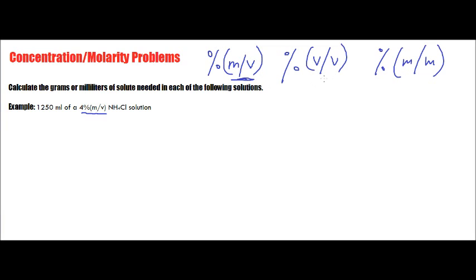Look at these letters — MV and VV. What they really mean is they're almost giving you what the equation actually is. Another way we can look at this is to reverse the symbol and put it after. So I'm going to write this as mass-volume percent, because what we're going to do is think algebra — move away from chemistry and get into a math mindset.